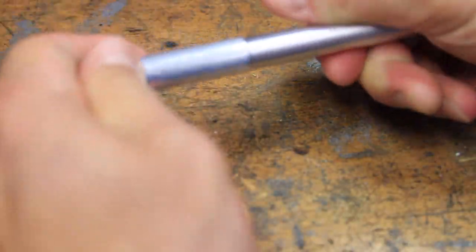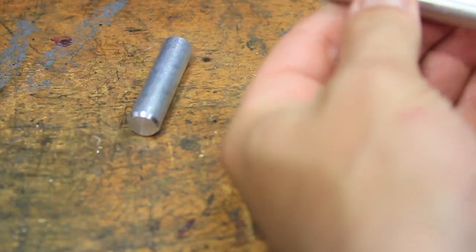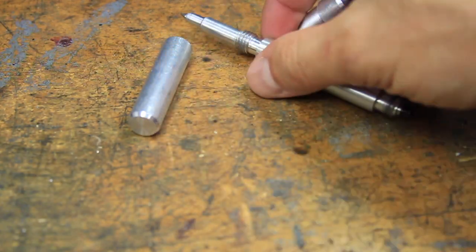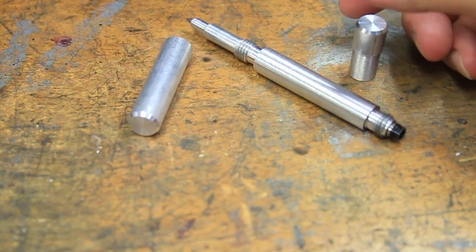Back on the lathe again for this project. This three-piece pen is the very first thing I made on the lathe, and while I like the raw look, it still seems unfinished because of the lack of a clip.